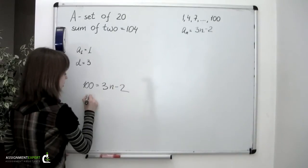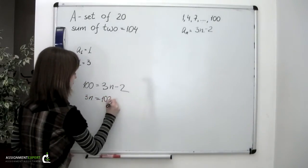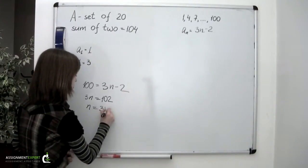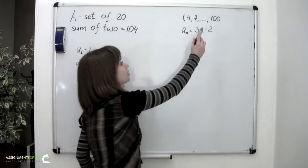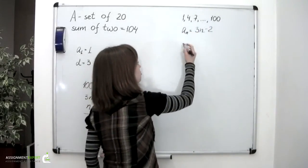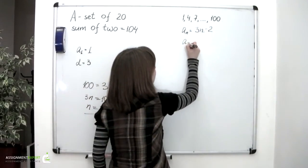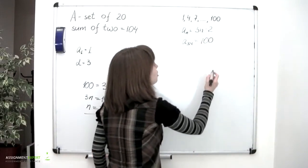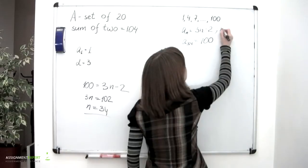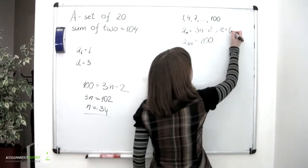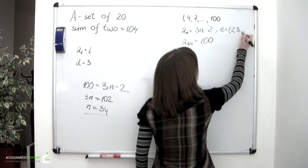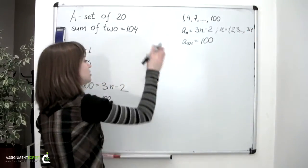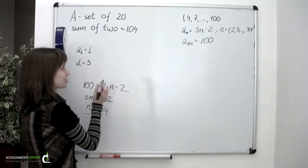We get 3n equals 102, or n equals 34. So we know that the 100 goes under the number 34. We can write it down as well, A sub 34 is equal to 100. And we now know that n can be of the value of 1, 2, 3, and up to 34. So there are 34 numbers, 34 terms in this progression.